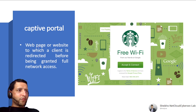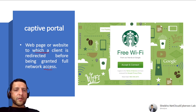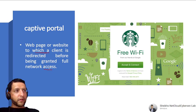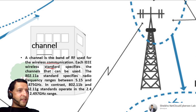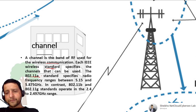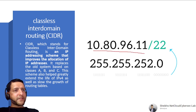A Captive Portal is a web page to which a client is redirected before being granted full network access — commonly seen at airports when connecting to Wi-Fi. It may require payment, check device health, or collect an email address. A Channel is a band of RF used for wireless communication; each IEEE wireless standard specifies which channels can be used, such as the 2.4 GHz or 5 GHz bands.